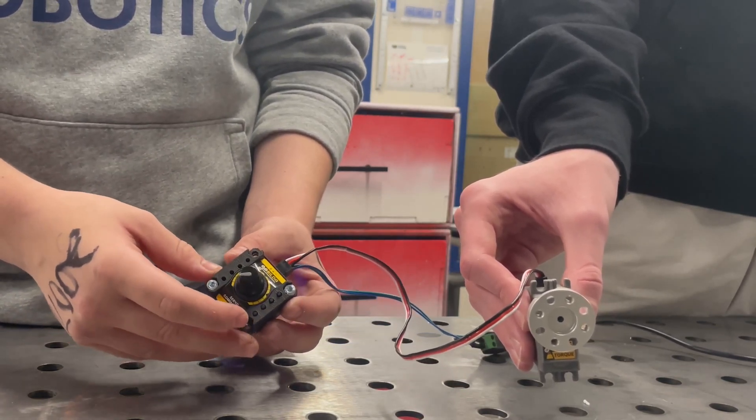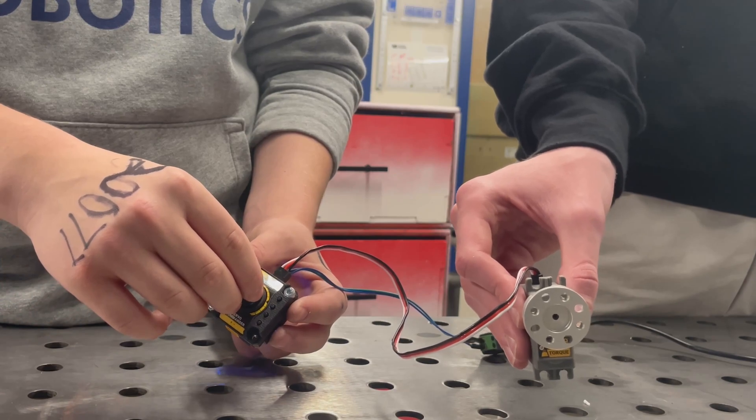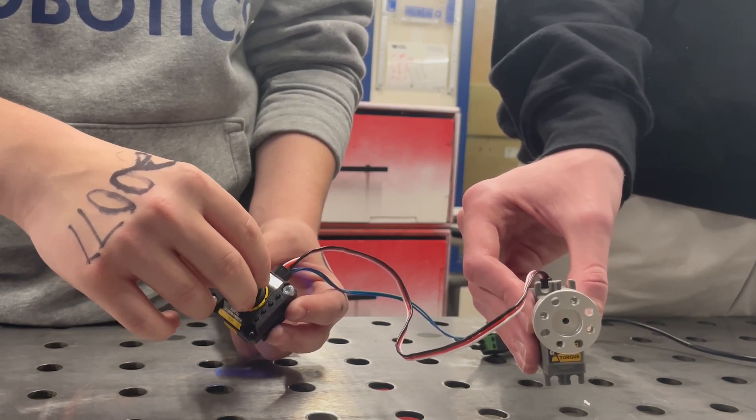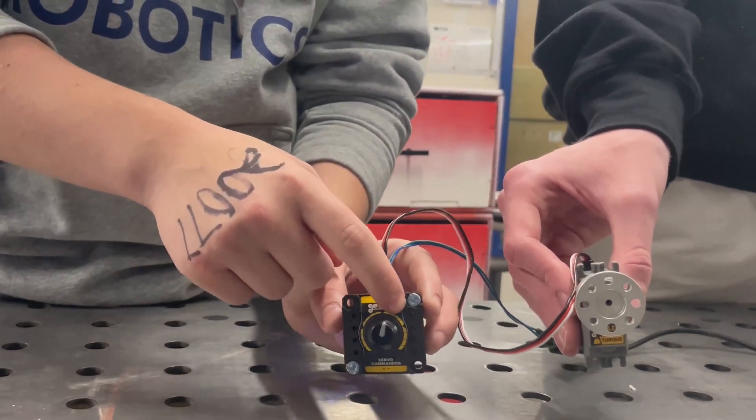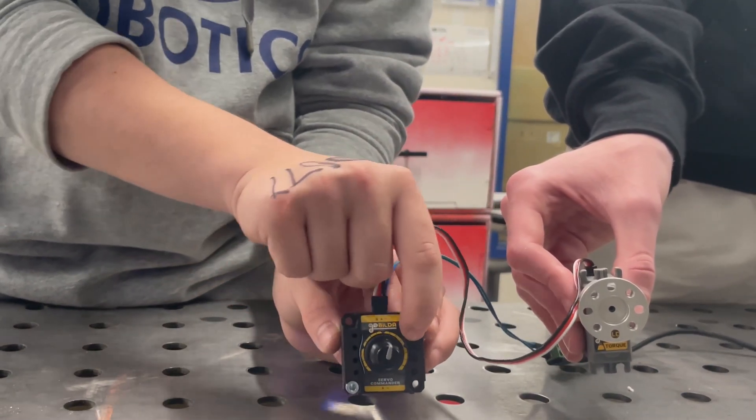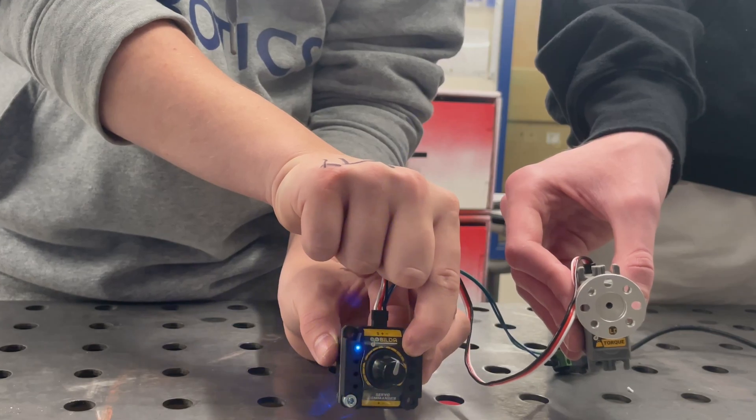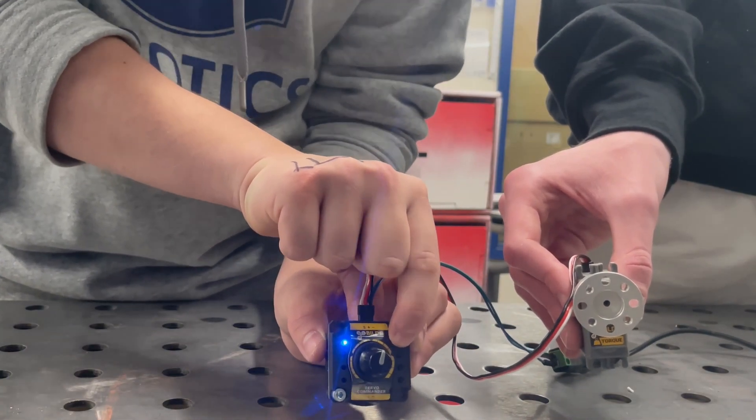The other thing that this can do is you can set it to a preset. When you turn this knob, then press one of these four buttons on the side and hold it until this light turns blue, then you have a preset.